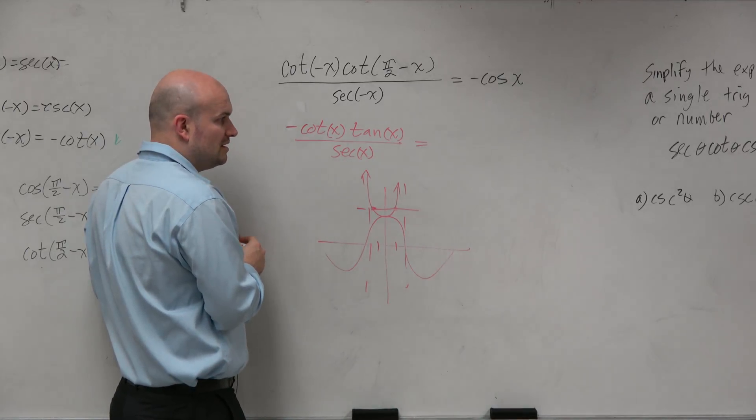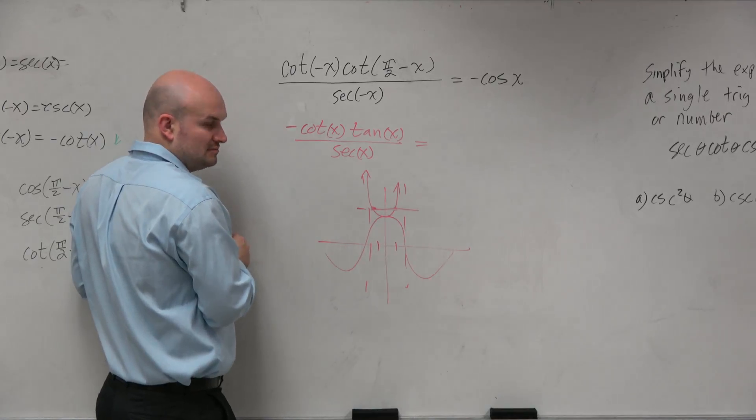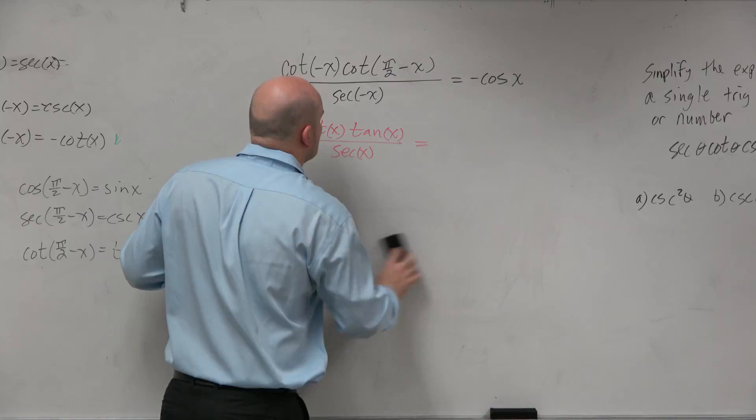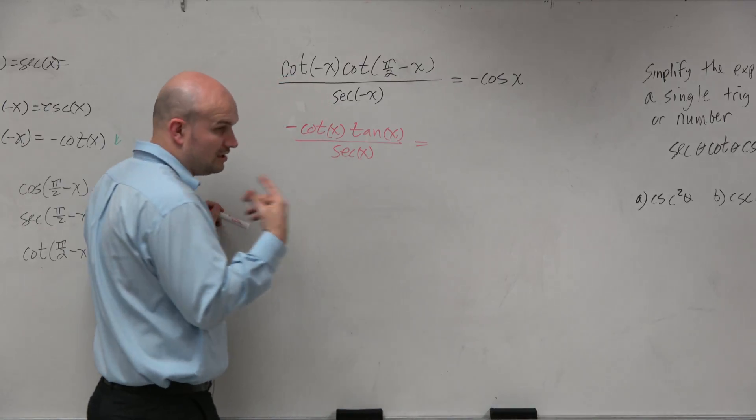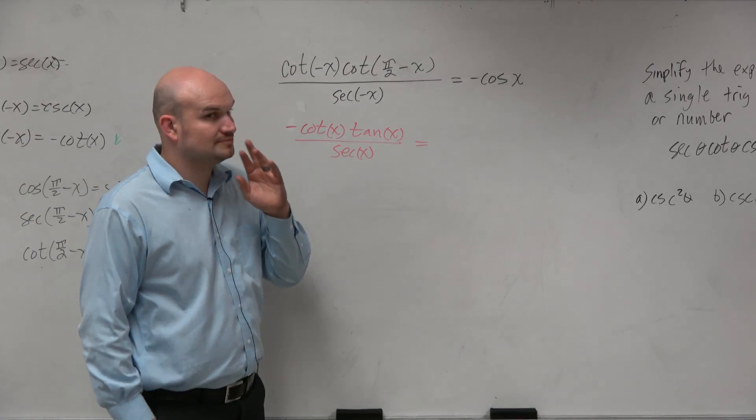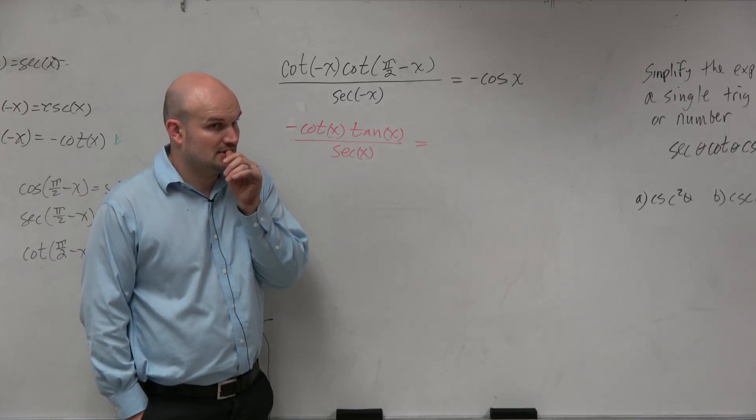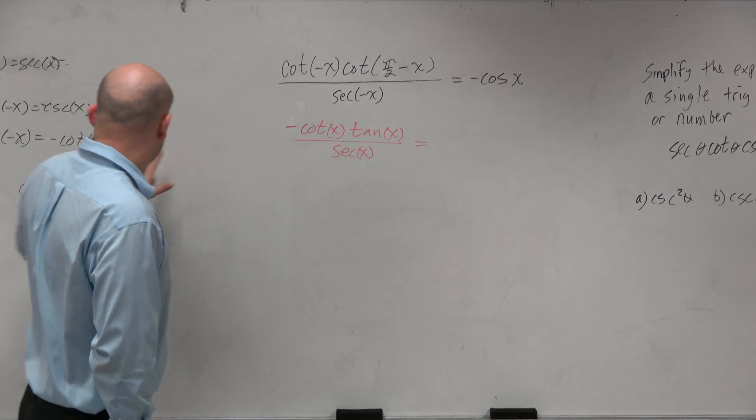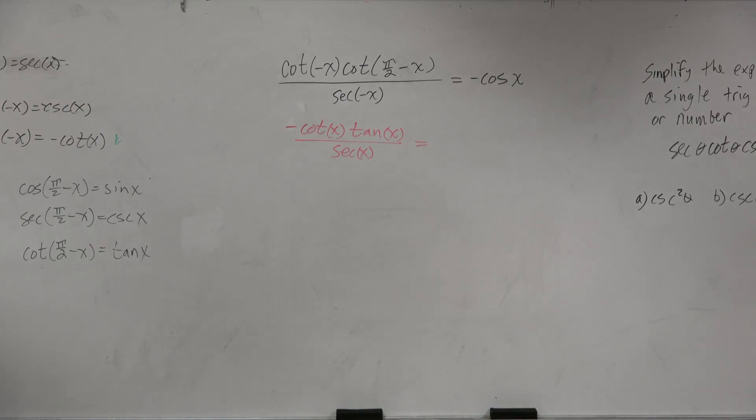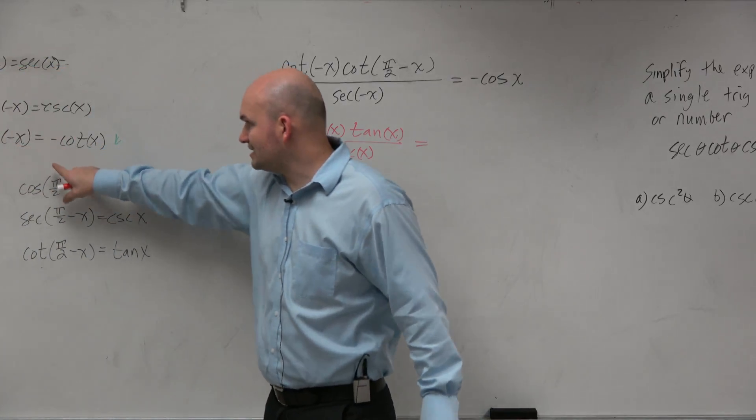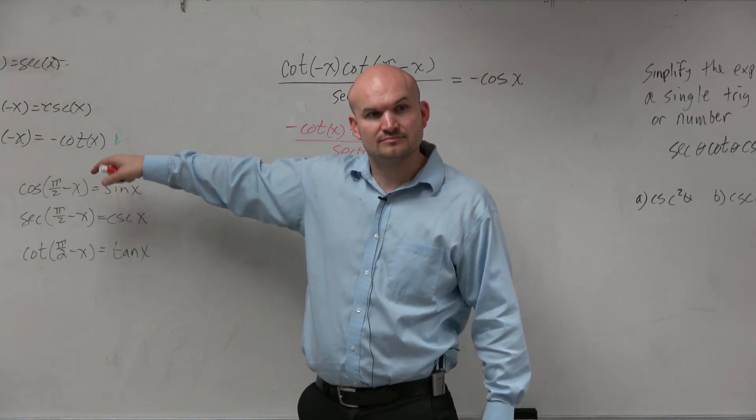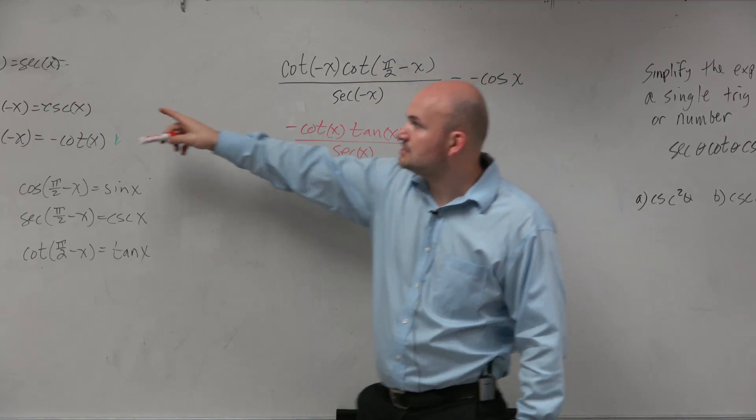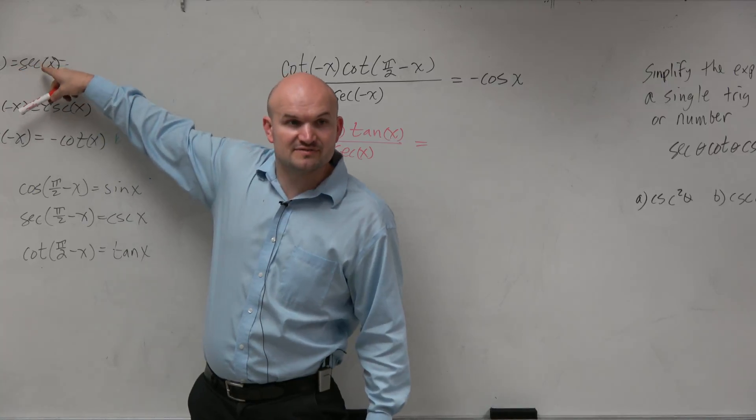So then why change it? I'm not changing it. If it's equal to the same thing, why would you switch it again? I'll explain because we'll want to use that. Where does the negative x make one of them negative? Cotangent of negative x. Cotangent of negative x is equal to negative cotangent of x. What about secant of negative x? Secant of negative x is equal to positive secant of x.